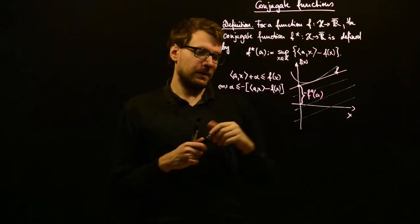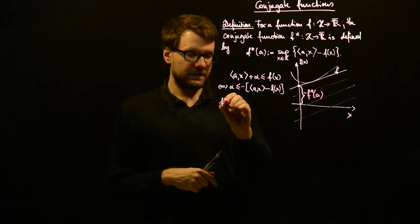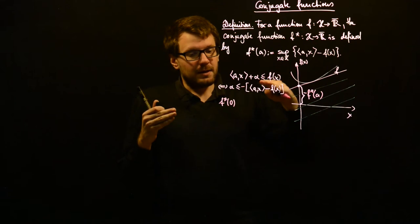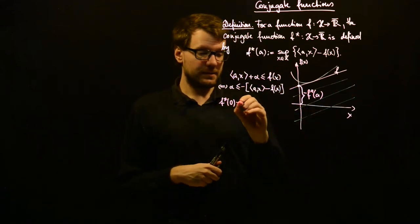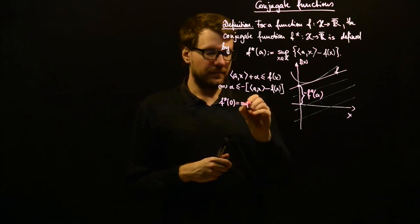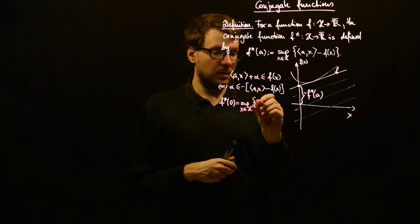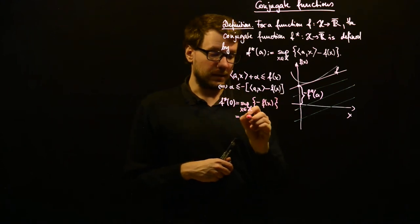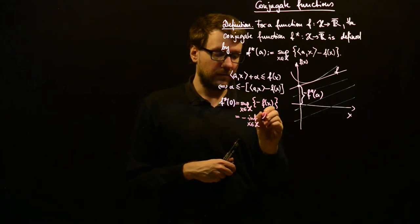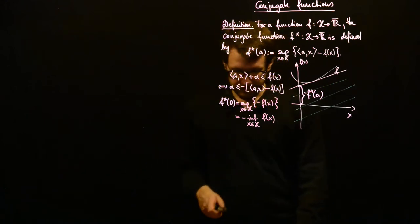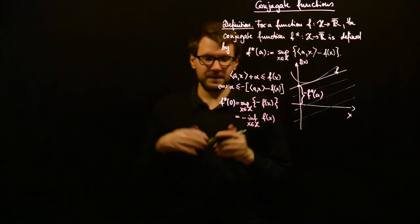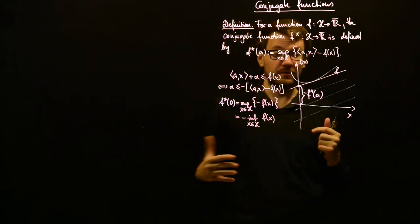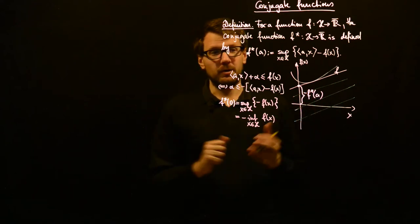The closest affine minorant to the graph of the function defines minus f star of a. For example, with slope zero — which characterizes a constant function — f star of zero equals minus the infimum of f of x, since the supremum over x of the inner product with zero is just zero. This is basically a visualization of what the value f star of a means for some slope a of an affine minorant.